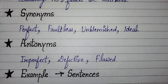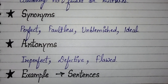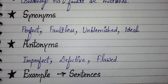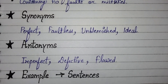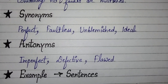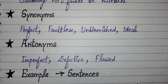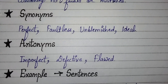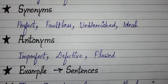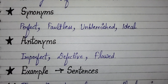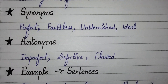Now, synonyms of Flawless are perfect, faultless, unblemished, and ideal. Antonyms of Flawless are imperfect, defective, and flawed.